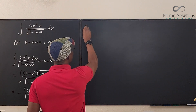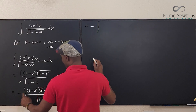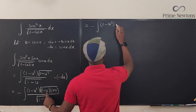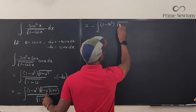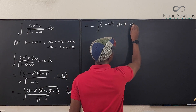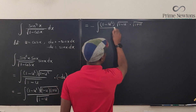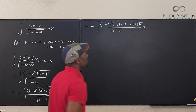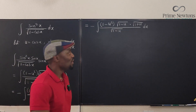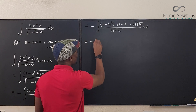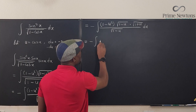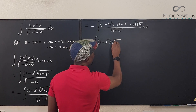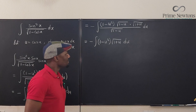There's a negative out front, and this becomes 1 minus u squared times the square root of 1 minus u times the square root of 1 plus u, all divided by the square root of 1 minus u, times du. Now the square root of 1 minus u in the numerator cancels with the square root of 1 minus u in the denominator.